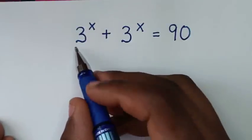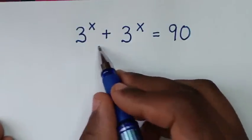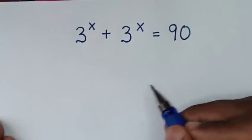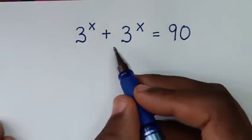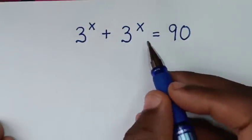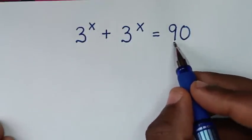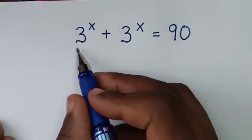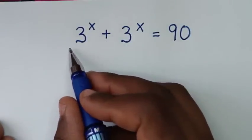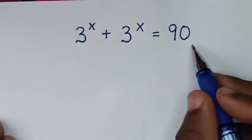Hello, you are welcome to solve this math problem, which is 3 power of x plus 3 power of x is equal to 90. We need to find the value of x from this equation.